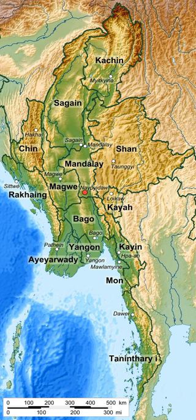States and regions are divided into districts. These districts consist of townships that include towns, wards, and village tracts. Village tracts are groups of adjacent villages.